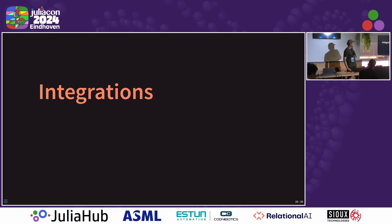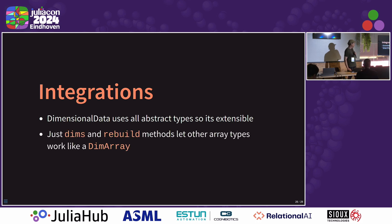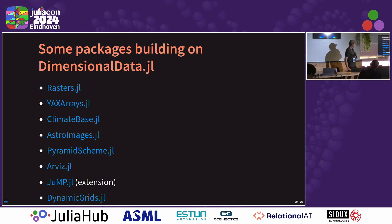And last I want to talk about the integrations. Dimensional data uses all abstract types everywhere, and that was intentional from the start. It was made to be built into rasters.jl, but I didn't want to put all this code in a really geospatial package with a lot of dependencies. So you just need to write a dims and rebuild method, and other array types will work like a dimensional array — broadcasting will work, all those things will maintain dimensions. And so far we have rasters, YAXArrays, CliMAbase, AstroImages, Pyramid Scheme, and then some modeling packages — RViz, JuMP, and DynamicGrids — that will accept and use dimensional arrays and output them.